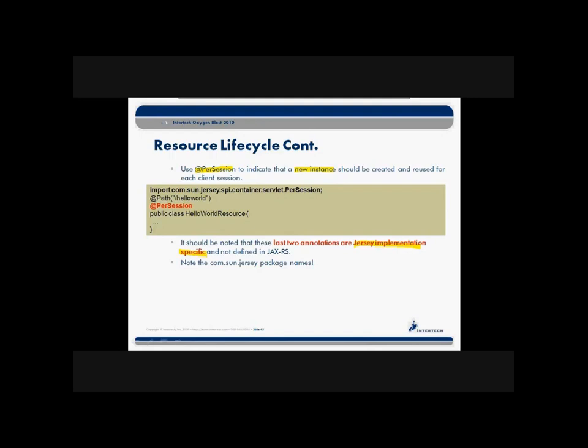The JAX-RS API specification today doesn't deal with these additional lifecycle capabilities. So if you're using these annotations to help with scalability or performance, recognize that you are leaning toward Jersey implementation specifics. You'll find you have to import com.sun.jersey names as part of your application code. That may change in the future, but at least today those are locked into Jersey. You'll find similar types of implementations in some of the other RESTful implementations of JAX-RS, where they provide the JAX-RS API along with additional lifecycle capability.